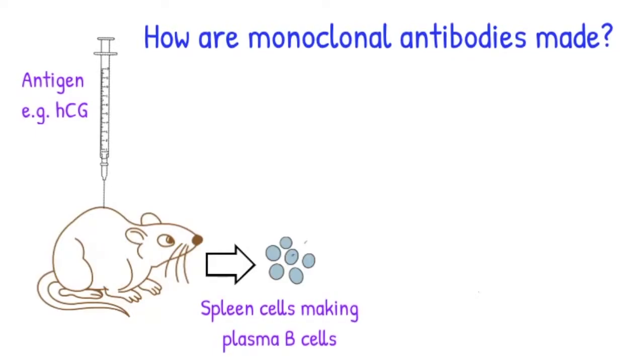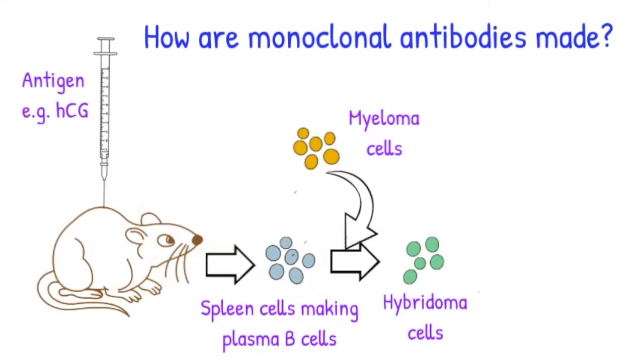The mouse's spleen cells, which produce the B cells, are removed in the lab. The spleen cells are then fused with human tumor cells, called myeloma cells, to form hybridoma cells, which divide indefinitely.